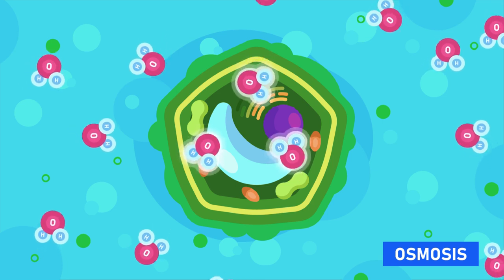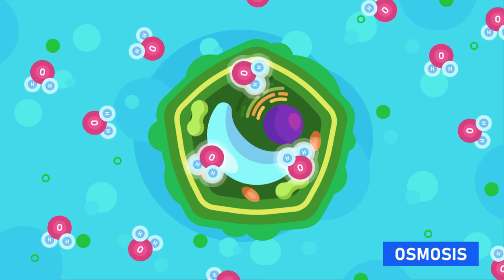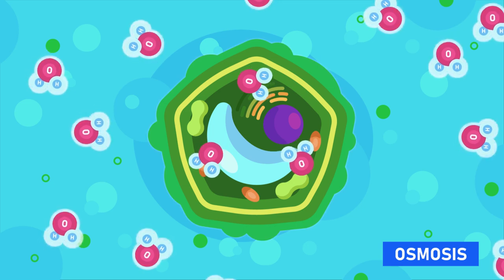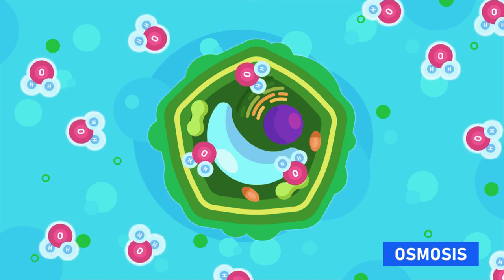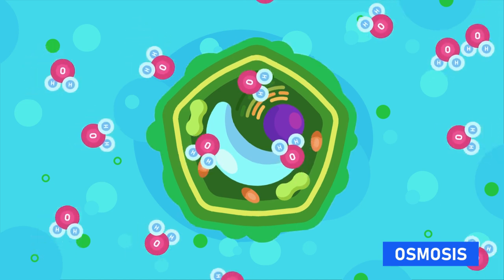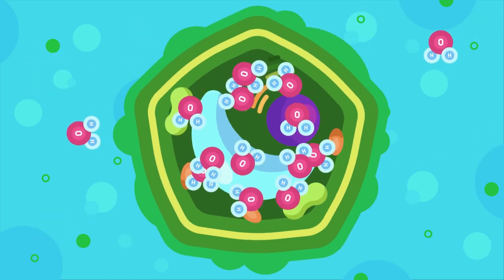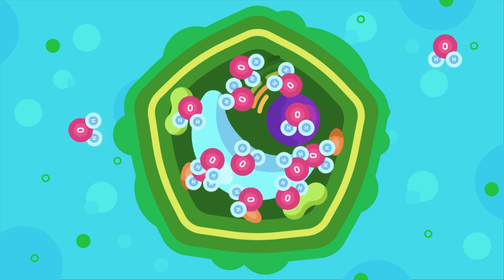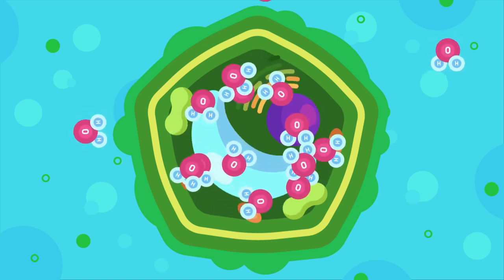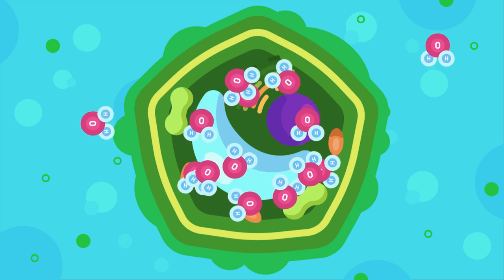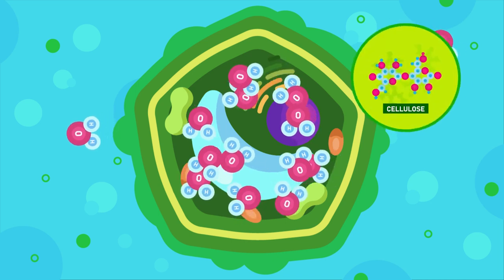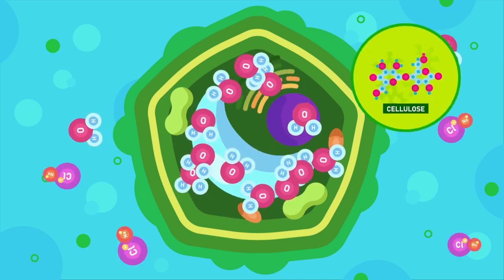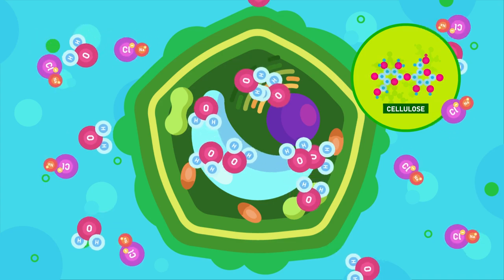Osmosis is a special type of diffusion that allows the movement of a solvent — mainly water — from a region where it is higher in concentration to a region where it is lower, through a partially permeable membrane. The membrane here is the cell surface membrane. The cellulose component of the cell wall makes it permeable and allows most substances to pass through.